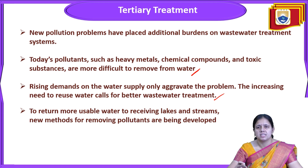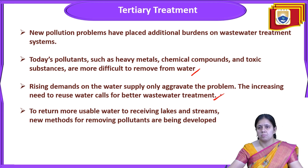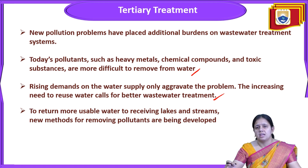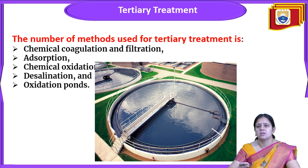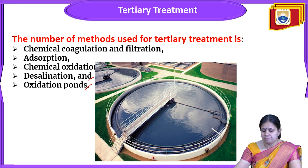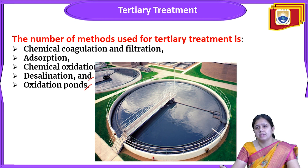New pollution problems have placed additional burden on the wastewater treatment system. Today's pollutants — heavy metals, chemical compounds, and toxic substances — are more difficult to remove, which is why tertiary treatment is required. Methods adopted for tertiary treatment include chemical coagulation and filtration, adsorption technique, chemical oxidation, desalination, and oxidation ponds.